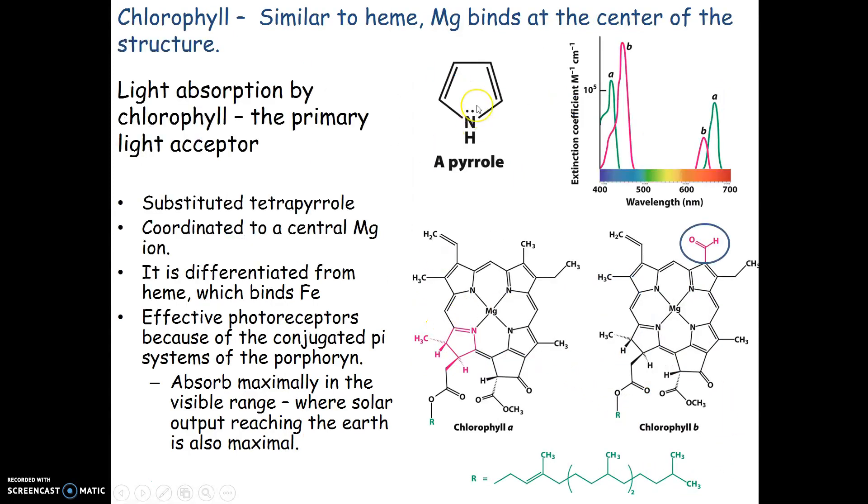Let's talk about this acceptor molecule, chlorophyll. It has a heme group associated with it, except instead of iron being in the center, we're dealing with magnesium. These conjugated pi systems allow for lots of electrons to flow around in this porphyrin.